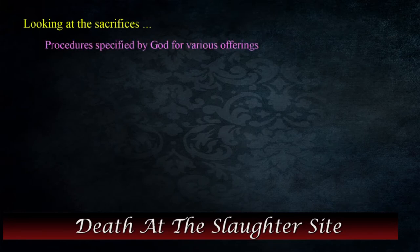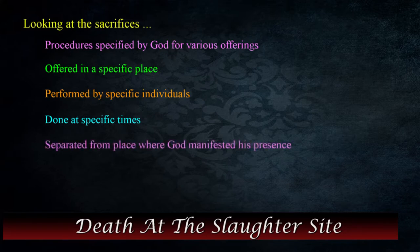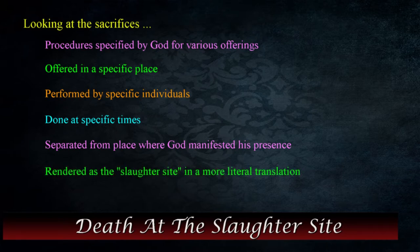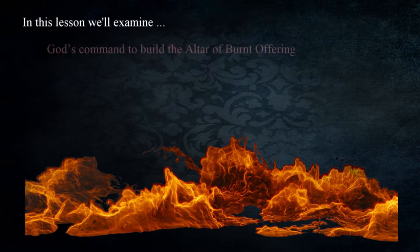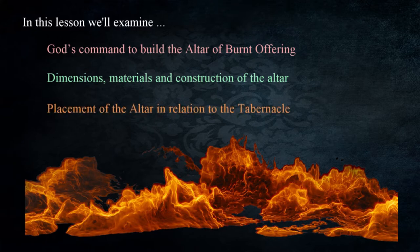Studying the sacrifices also emphasizes how much simpler worship is for us today when compared to the duties of the Levites and priests. As we look at the sacrifices, we find that there were procedures put in place by God for a number of offerings — offered in a specific place by specific individuals at specific times. The place was separated from where God manifested his presence, and in a more literal translation is rendered as 'the slaughter site' by Everett Fox in The Five Books of Moses, indicating the brutal and gruesome nature of what was done there.